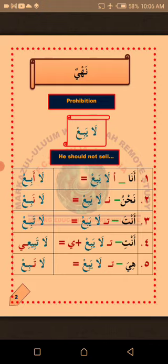Nahayun — prohibition. We are going to learn from this lesson how to instruct others in Arabic not to do something using different forms of verbs. The question is: how do we change the verb la-yabi' to suit the pronouns below? The verb la-yabi' simply means 'he should not sell.'